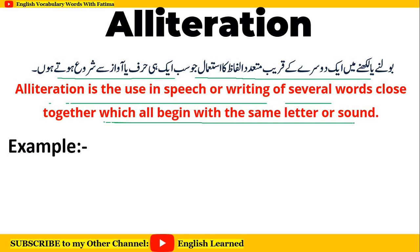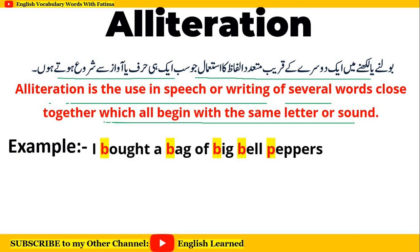اس کو example سے اور بہتر سمجھ سکتے ہیں۔ Alliteration کی بہت اچھی مثال ہے: 'I bought a bag of big bell peppers۔' اس میں آپ دیکھ رہے ہیں کہ جو بھی main words ہیں سنٹینس کے وہ سارے B سے sound کر رہے ہیں — وہ B سے start ہو رہے ہیں اور B ان کی sound ہے۔ تو ایسے سنٹینس کو ہم Alliteration کہتے ہیں۔